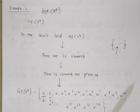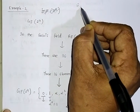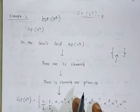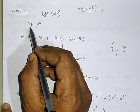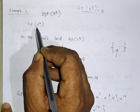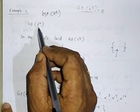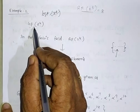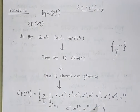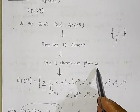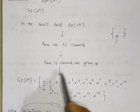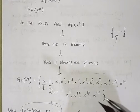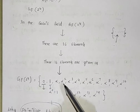Moving to the second example: in GF(2³) we had 8 elements. Now consider GF(2⁴). Since 2⁴ equals 16, in this particular Galois field GF(2⁴) there are 16 elements. The representation of all 16 elements starts with 0 and 1 followed by alpha powers.